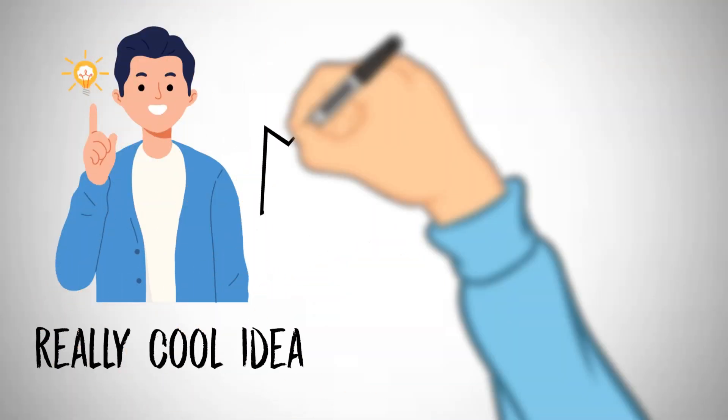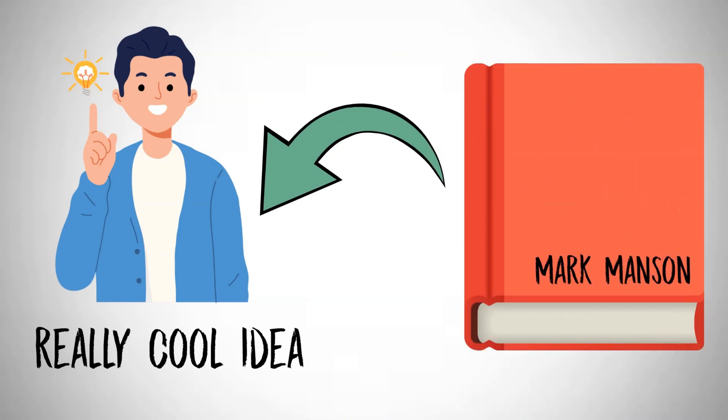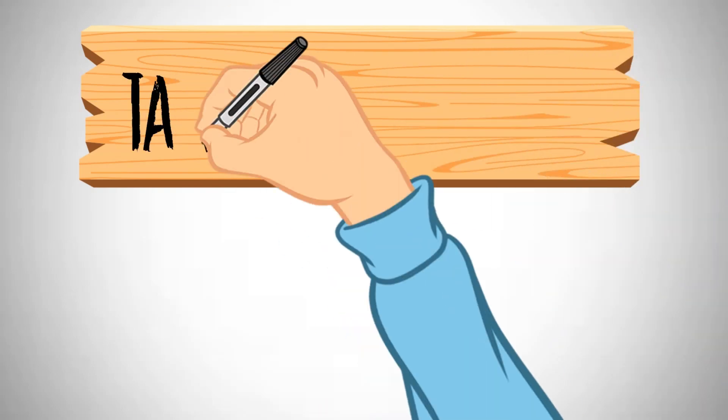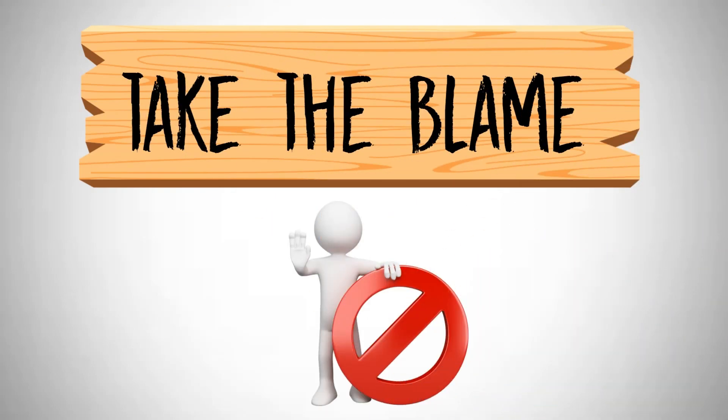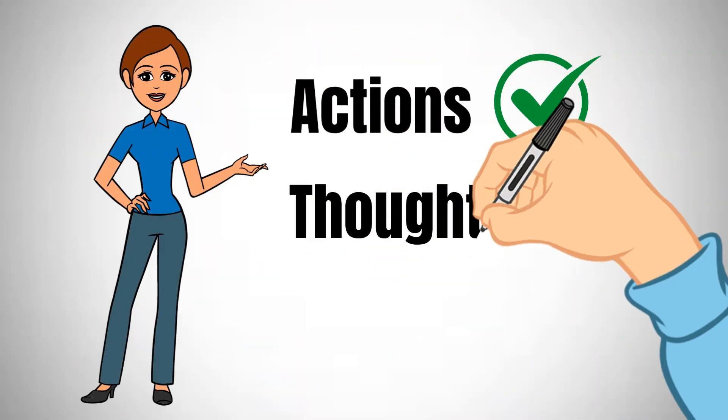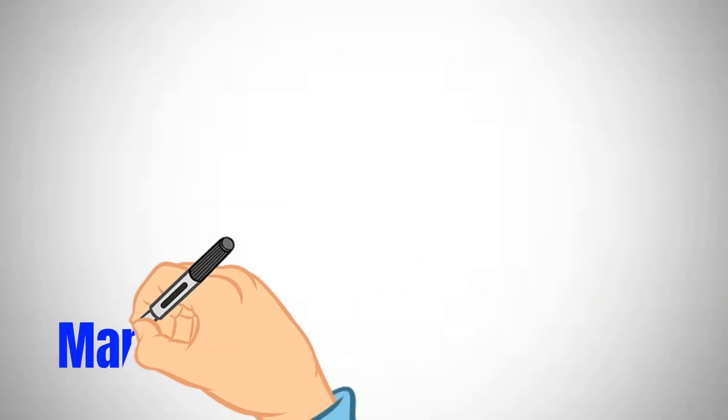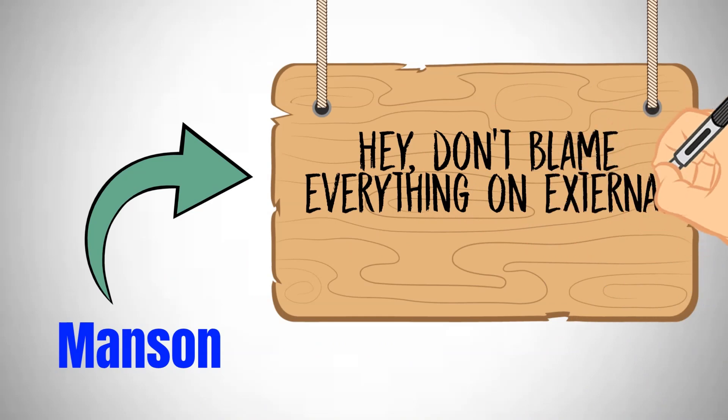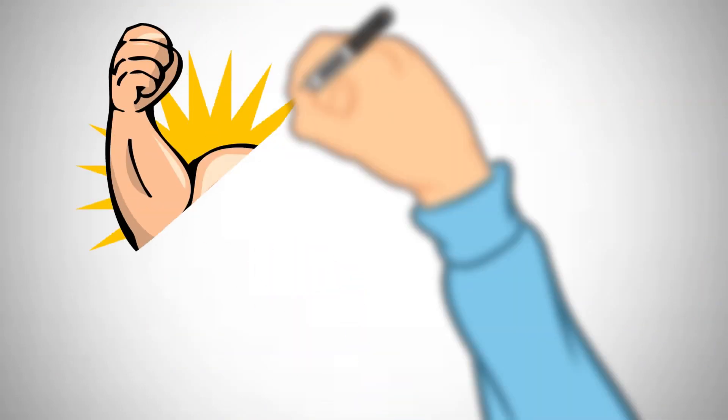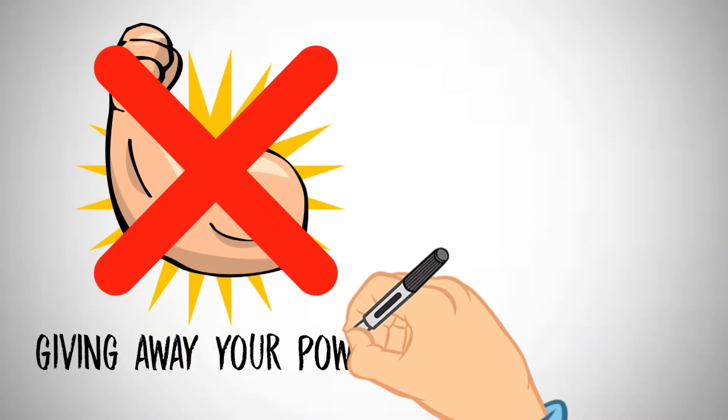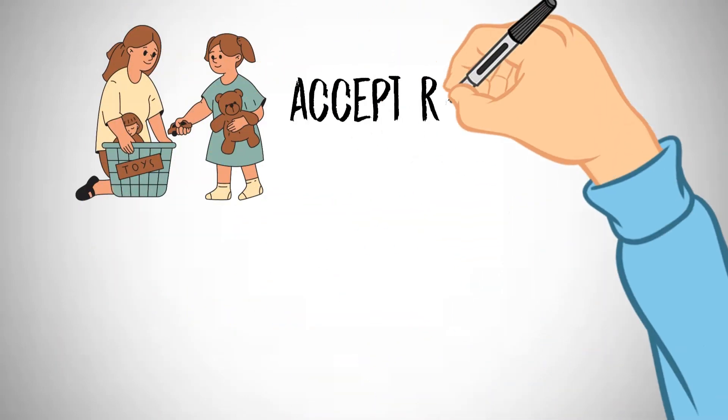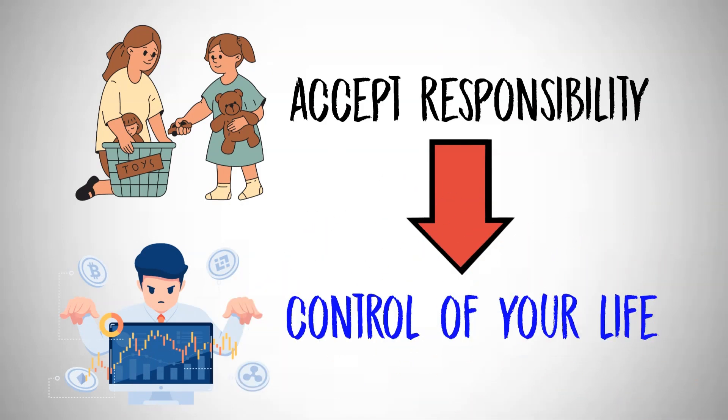Let's dive into a really cool idea from Mark Manson's book, Taking Responsibility for Your Life. This isn't your usual take the blame stuff. It's about owning your actions, thoughts and feelings. Manson is all about saying, don't blame everything on external stuff or other people. When you do that, it's like giving away your power and feeling helpless. But if you accept responsibility, you're taking control of your life. You're saying, I've got the power to change things and make my life better.